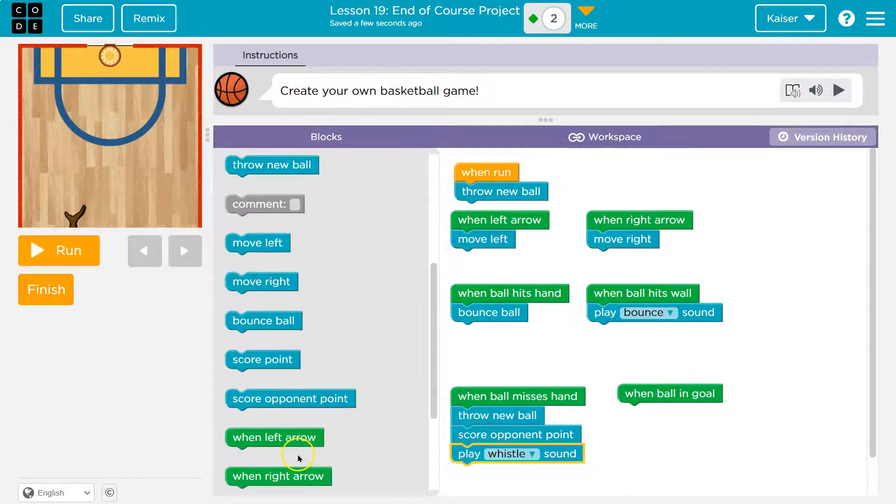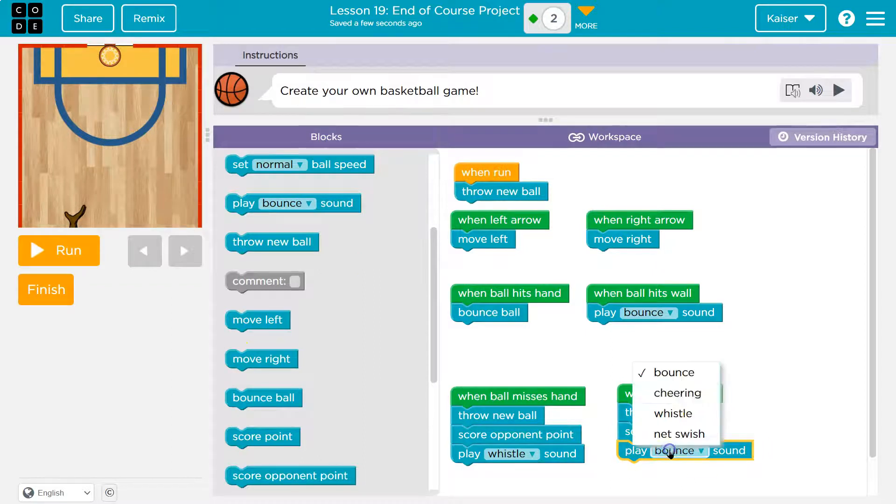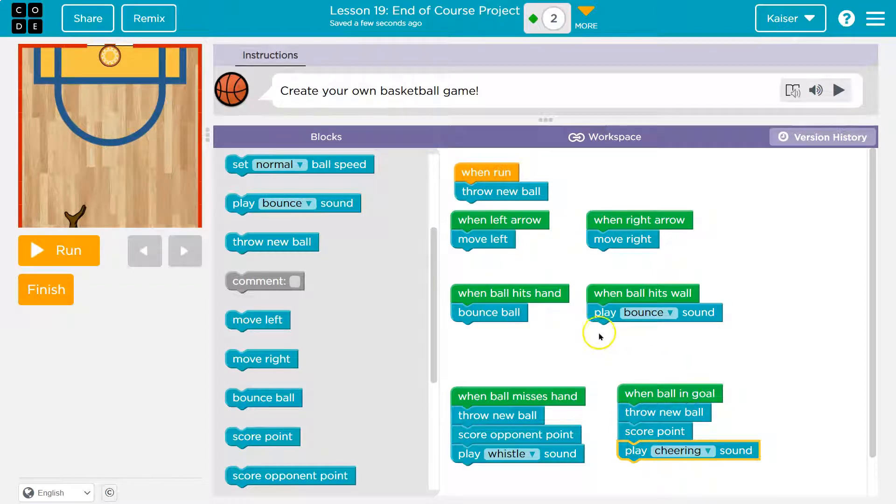Now, when I make a goal, what should I have happen? Score a point, yeah. Throw a new ball. I'll put that first again. And code always runs in order. So, whenever these events happen, it's going to say, oh, ball is in goal. Now what? Throw a new ball, score a point, and then I'm going to play a sound for fun, which will be cheering.